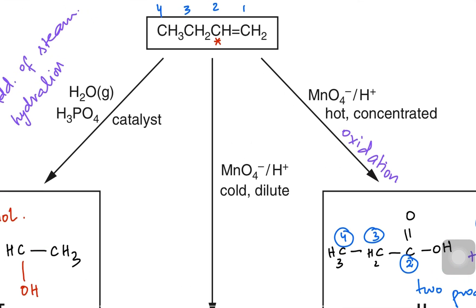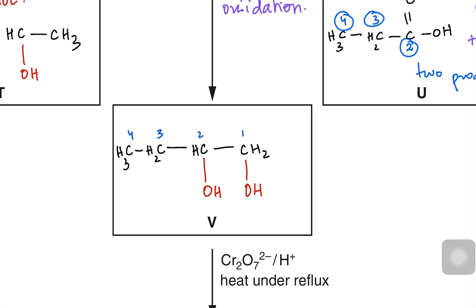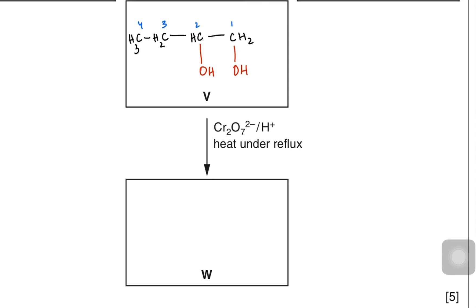To make product V, they are doing oxidation with cold and dilute manganate. With cold dilute manganate you add two OH groups on the same molecule, one on each carbon. So you will make a structure similar to butene but with two OH groups added — one on carbon one and one on carbon two — while carbons three and four remain the same.